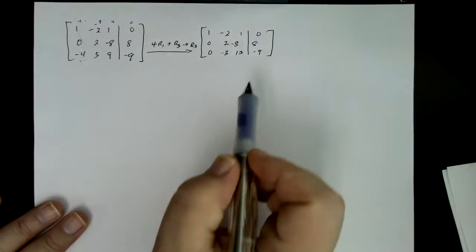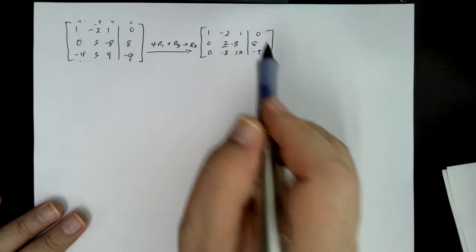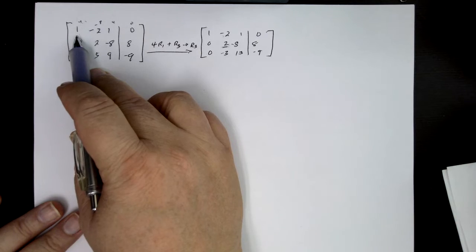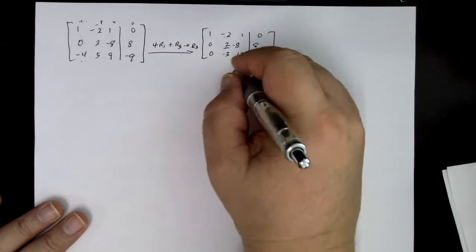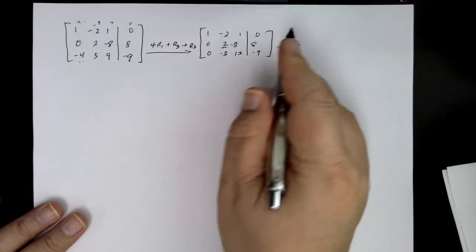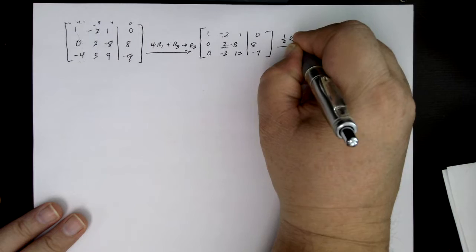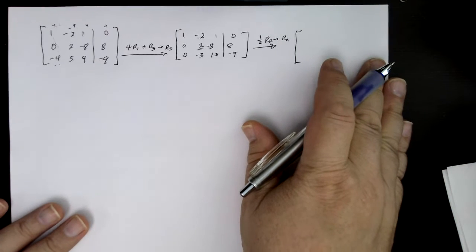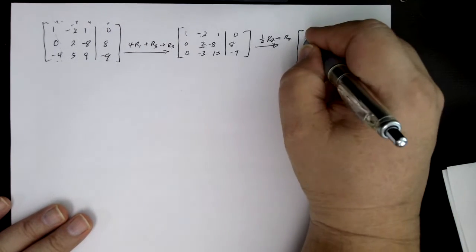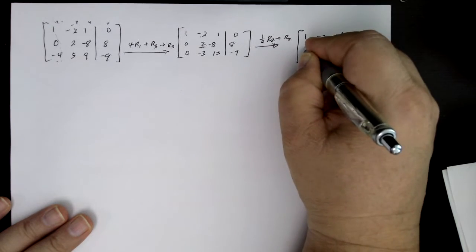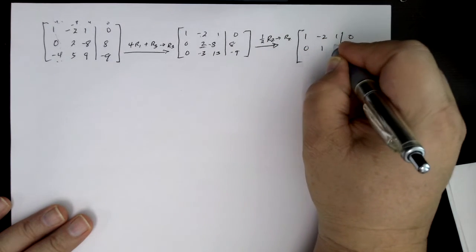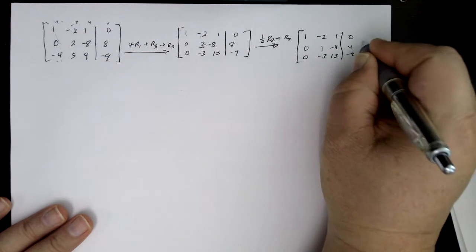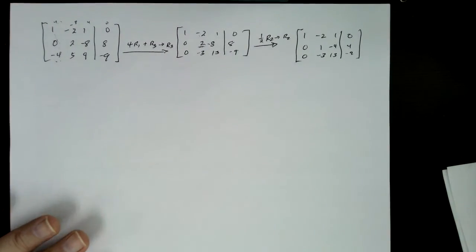Good. Now before I continue, I'm going to be looking at the second variable in the second system. So there's a two there. I think I'd like to have a one. It just made it a little bit easier to eliminate the variable. And so in that case, the next row operation that we're going to use is we're going to take one half times R2 and put the result back into R2. Okay, and so what will our system look like in that case? We'll have our one minus two, one, zero, zero. Now I'm dividing by two, so that's going to be a one minus four, four, and then a zero minus three, thirteen minus nine. Good.